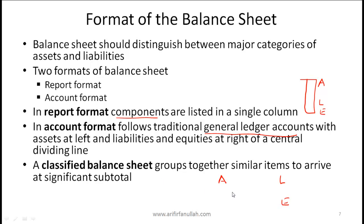A classified balance sheet groups together similar items to arrive at significant subtotals. For example, cash, inventory, and accounts receivable are grouped together with a subtotal for current assets. Then property, plant and equipment items are summed together for another subtotal, and so on. This grouping structure is what defines a classified balance sheet.